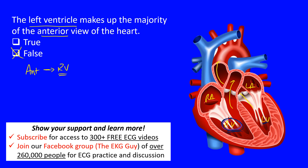So again, this question is asking does the left ventricle make up the majority of the anterior portion of the heart, and that is certainly false. It is not the left ventricle — it's the right ventricle that makes up the anterior portion of the heart.